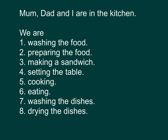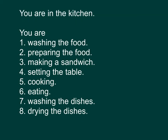Mom, dad and I are in the kitchen — 妈妈、爸爸和我都在厨房里面。Mom, dad and I 就是这个句子的 subject，我们可以用 we 来代表。因为这里有三个人，所以后面我们是跟 are。We are washing the food. We are preparing the food. We are making a sandwich. We are setting the table. We are cooking. We are eating. We are washing the dishes. We are drying the dishes.